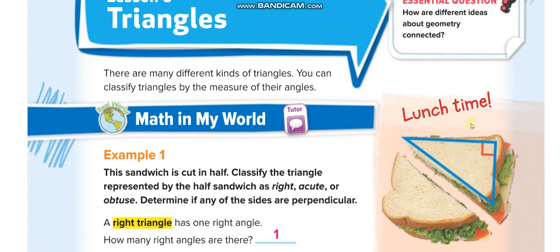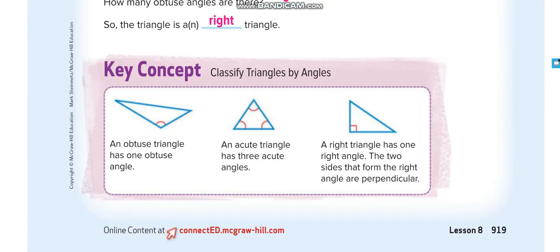You guys know that a triangle is a shape which has three sides and three angles. There are many different kinds of triangles. You can classify triangles by the measure of their angles, which we'll focus on in this lesson. You can also classify triangles by their sides: equilateral (all sides equal), isosceles (two sides equal), and scalene (all sides different lengths).